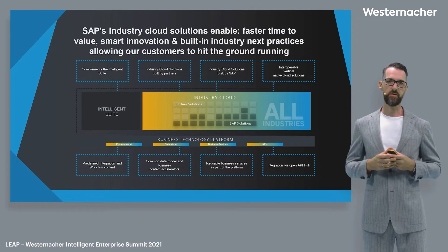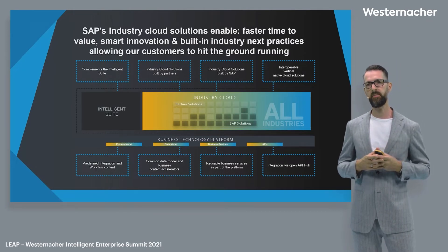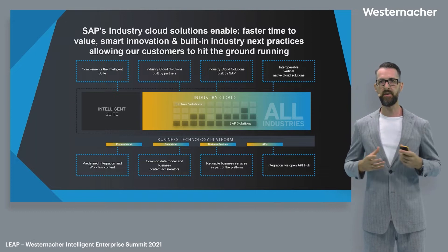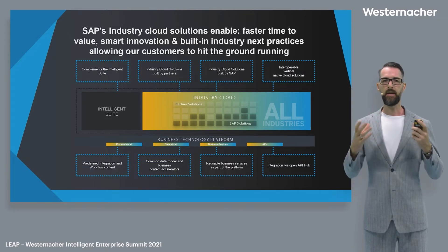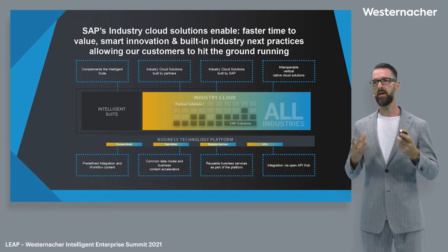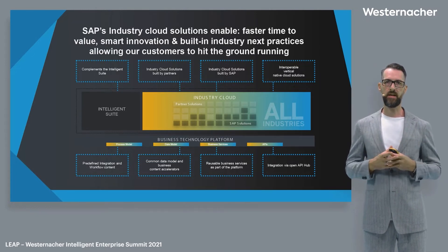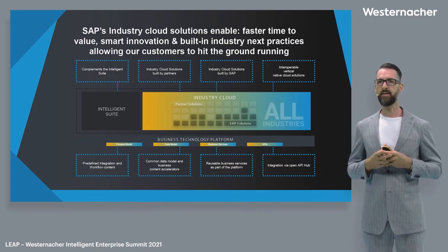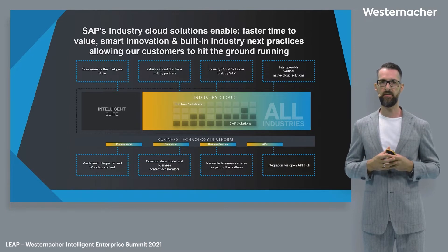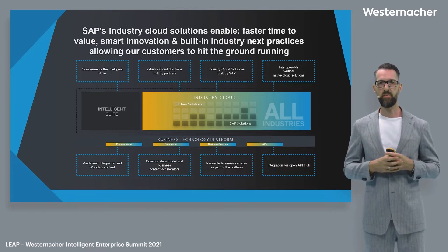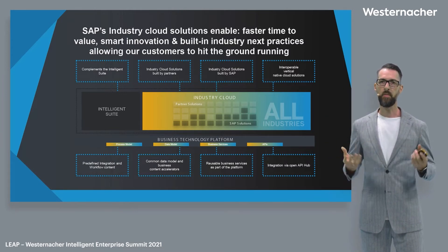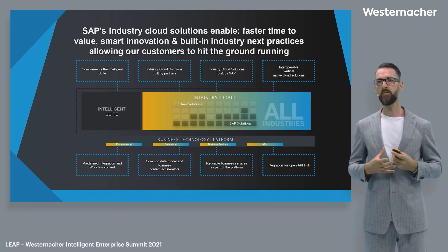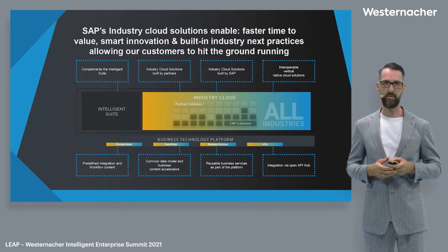Let's have a closer look at the Industry Cloud. It's our new program where together, SAP with a lot of partners, builds industry functionality and industry edge solutions in retail, in the digital supply chain, demand network, and automotive. It complements the Intelligent Suite and interoperates vertical native cloud solutions with SAP S4HANA. We use the Business Technology Platform as a glue. The BTP provides the common process model across logistics, finance, and the industry cloud apps, providing reusable business services and integrating via the open API hub of SAP.